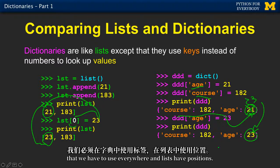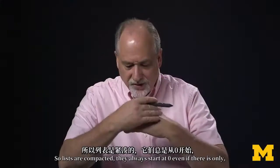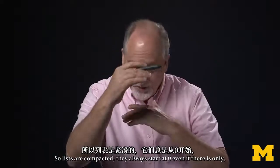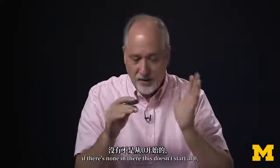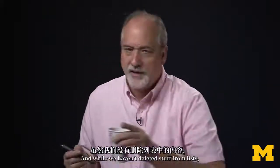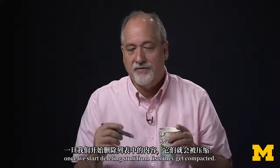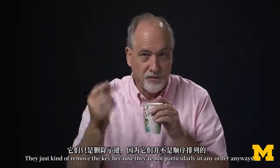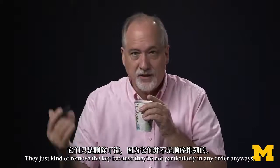But dictionaries have these labels that we have to use everywhere. And lists have positions. So lists are compacted. They always start at zero, even if there's only, if there's none in there that doesn't start at zero. But if there's one or more things, the first one is always zero. And while we haven't deleted stuff from lists, once we start deleting stuff from lists, they get compacted. But not true from dictionaries. They just kind of remove the key because they're not particularly in any order anyways.